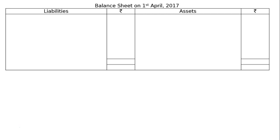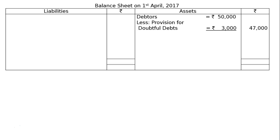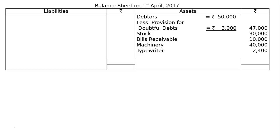Balance sheet as at 1st April 2017. On the asset side: debtors Rs. 50,000 less provision Rs. 3,000 — final column Rs. 47,000, reduced by Rs. 2,000. Stock Rs. 30,000, bills receivable Rs. 10,000, machinery Rs. 40,000. Typewriter was not recorded earlier but now it is recorded in the books, hence it will be shown on the asset side. Patents are valueless and went off the balance sheet. Machinery Rs. 40,000. Cash: already Rs. 4,000, plus cash brought in by the new partner — Rs. 16,000 for goodwill and Rs. 69,240 for capital — totalling Rs. 89,240 in cash. The total of the asset side is Rs. 2,14,640.